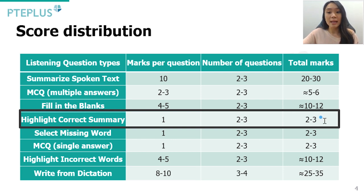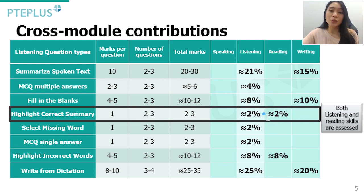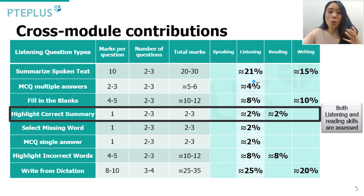This comparison advises how you should manage your time — not just in the exam but also when preparing. Highlight Correct Summary also tests your reading, since you have to read the summary options, and it contributes about two percent to your listening score. Compare that to Summarize Spoken Text at 21 percent, Write from Dictation at 25 percent, and Fill in the Blanks and Highlight Incorrect Words at about eight to ten percent each. HCS contributes two percent to listening and another two percent to reading.